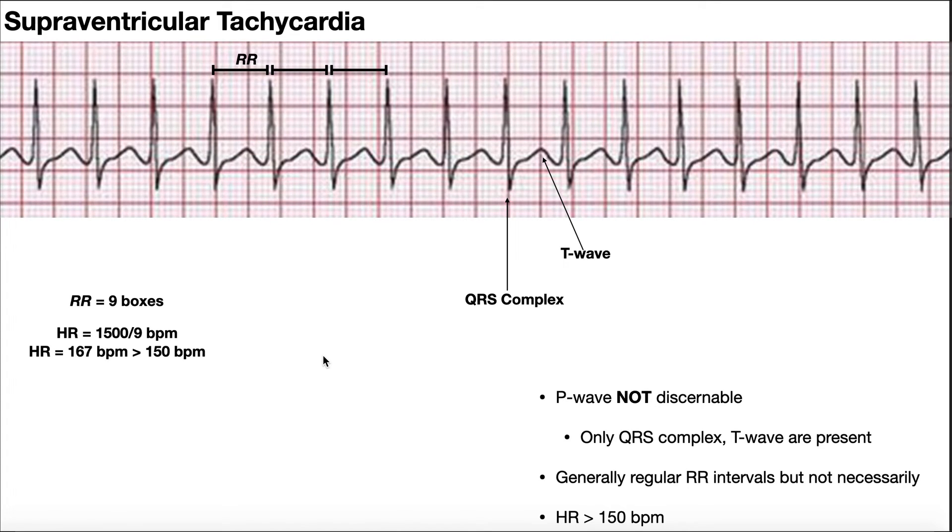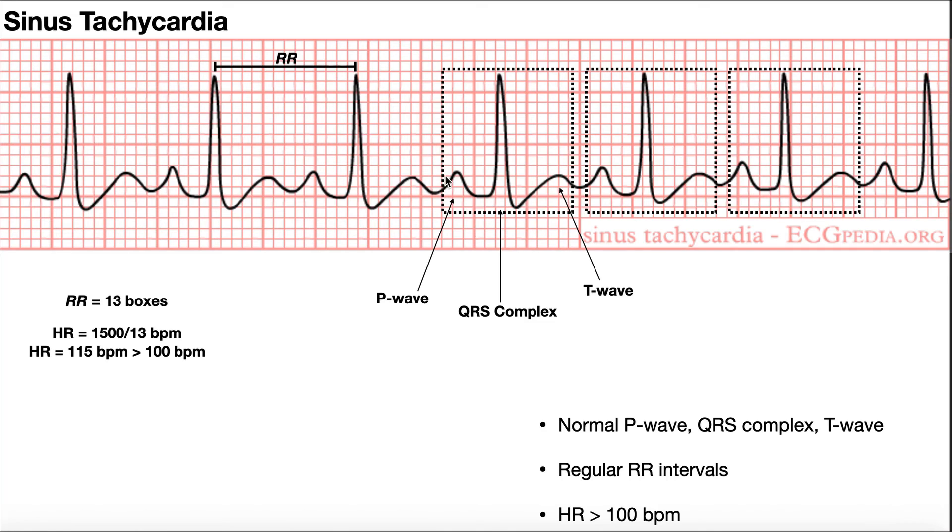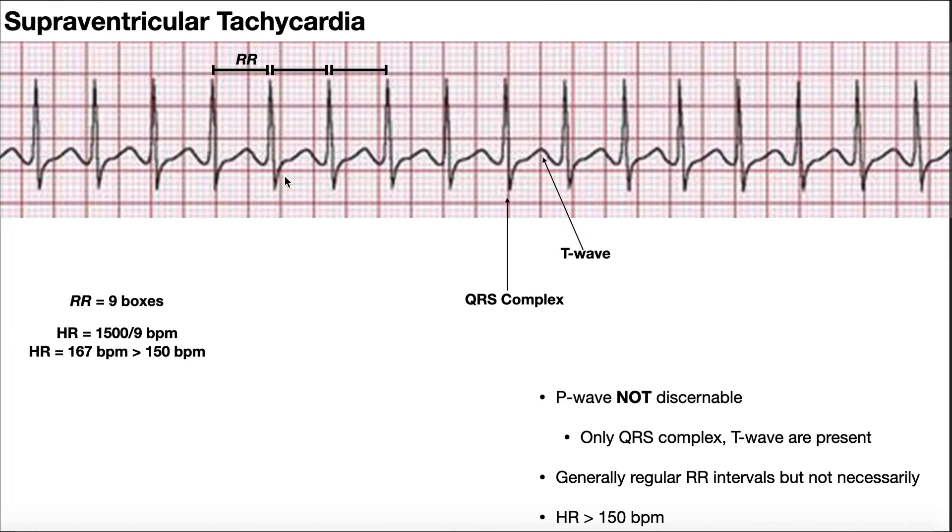We can distinguish this from sinus tachycardia in another way. Not only is the heart rate bigger than 150, but there's no discernible P wave. In sinus tachycardia, we had a discernible P wave, QRS and T. P, QRS, and T. In a supraventricular tachycardia, there's just one hump. And if you have that pattern coupled with a heart rate greater than 150, you can be pretty confident that it's a supraventricular tachycardia.